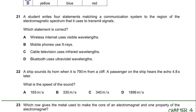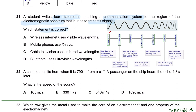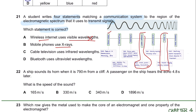Question 21. A student writes four statements matching a communication system to the region of the electromagnetic spectrum it uses to transmit signals. Which statement is correct? Remember the uses of each part of the electromagnetic spectrum. For visible wavelengths, it says wireless internet—that is wrong. Mobile phones use X-rays, but X-rays are used in medical imaging—wrong. Cable televisions use infrared wavelengths—that is correct. The answer is C.